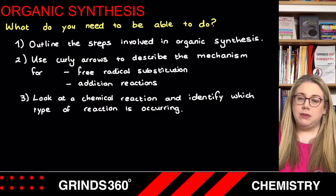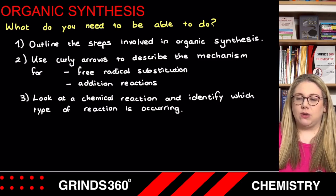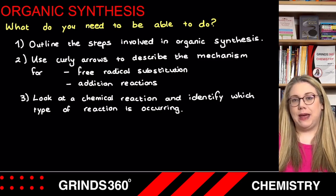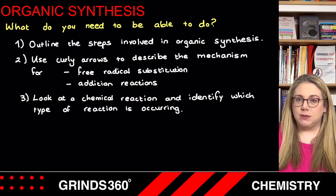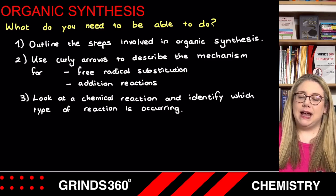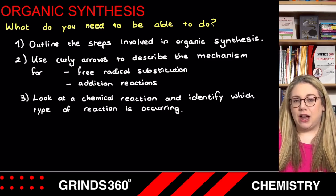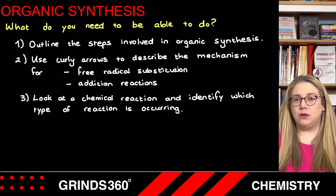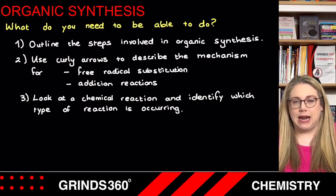Number two, you need to be able to use the curly arrows to describe a mechanism. There are two mechanisms on the Leaving Certificate course. The first one is free radical substitution, or halogenation of alkanes, and the second is for addition reactions. The type of arrow that you use for each mechanism is different because of what's happening with the electrons.